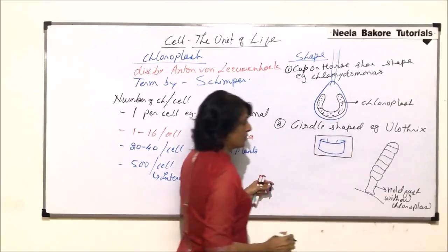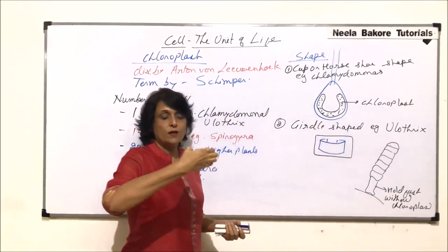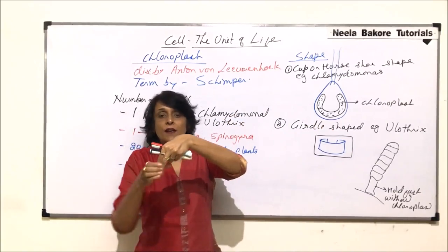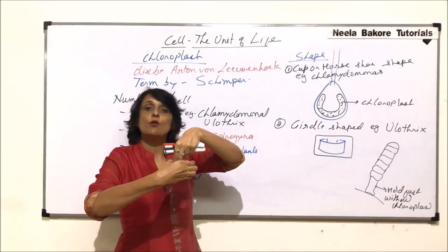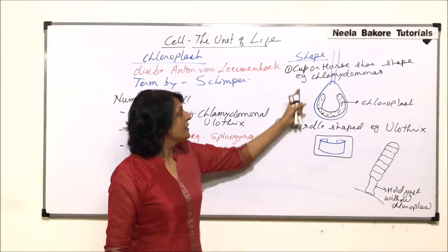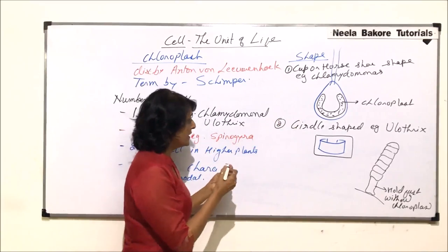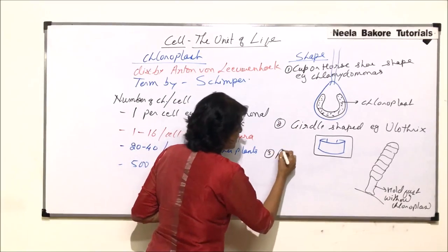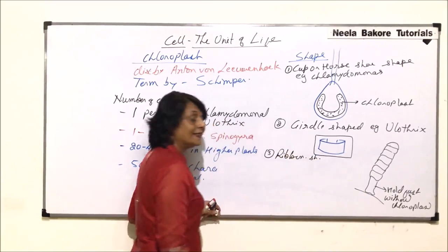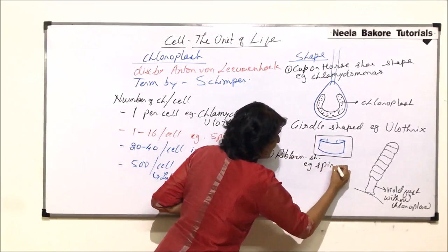If we enlarge one cell of Ulothrix, we find a girdle-shaped chloroplast. A girdle is like a C-shaped structure. The nucleus is somewhere in the middle. So the shape is girdle-like here, whereas in Chlamydomonas the shape is cup shape. The third example for shape is ribbon shape, and this is seen in Spirogyra.